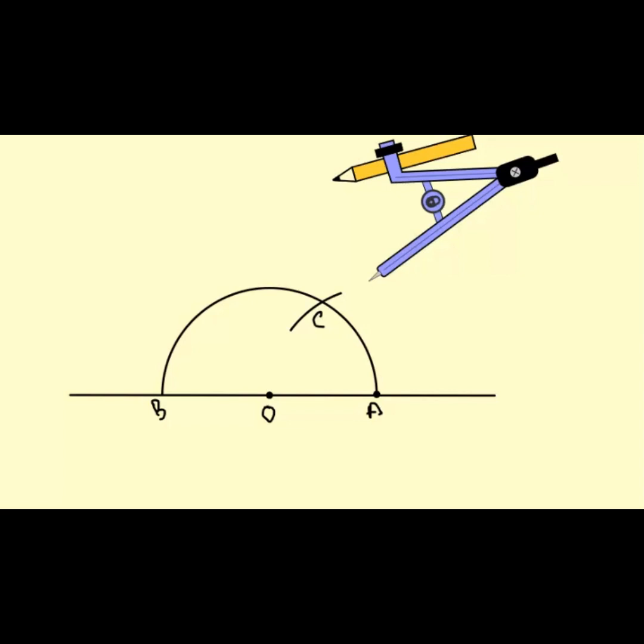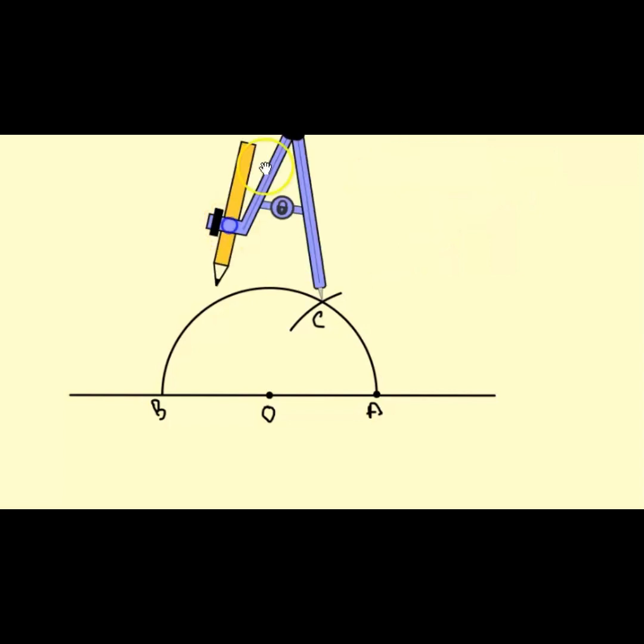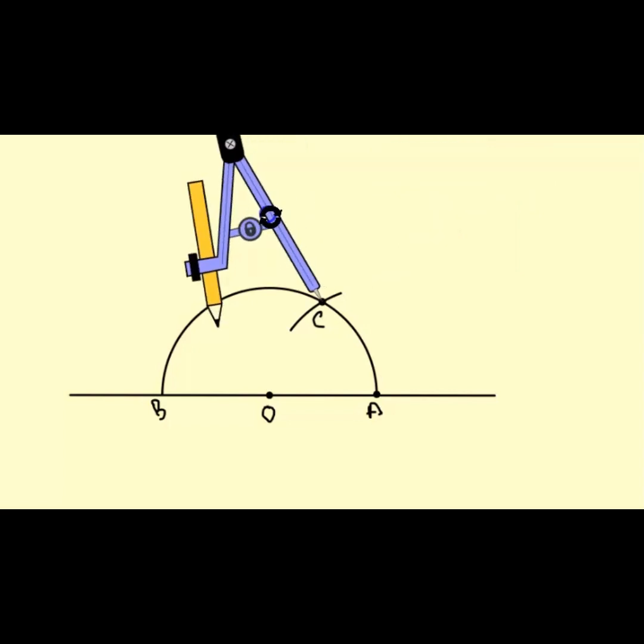Now from C, without changing the radius, draw an arc on the semicircle and mark this intersection as D.